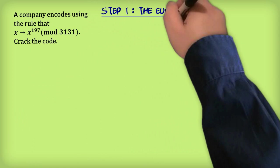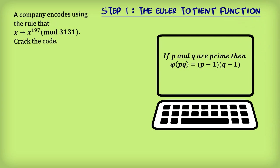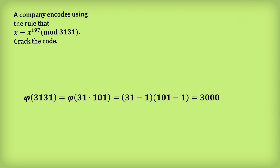So now to decoding. Step 1: the Euler-Totient function. This tells us that if we have two primes p and q, then the Euler-Totient function of the product is equal to p minus 1 times q minus 1. In our case, 3131 is actually the product of two primes, 31 and 101, and so the Euler-Totient function is 3000.